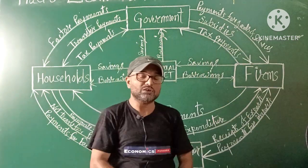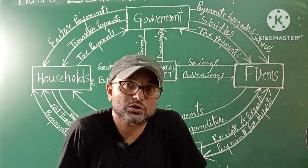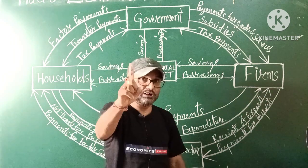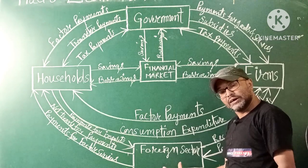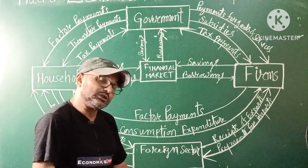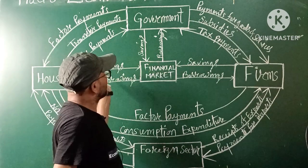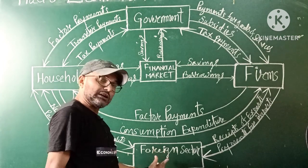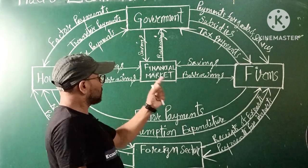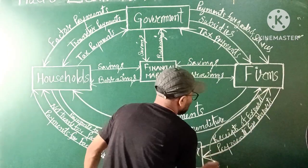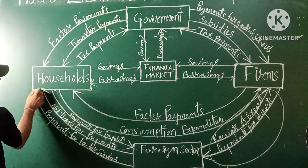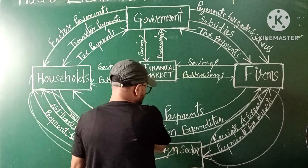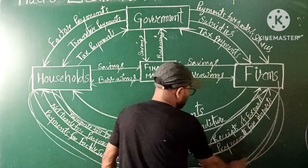This is the four-sector circular flow. The foreign sector concept involves its relationship with firms and with households. The most important concept here is the addition of the foreign sector to the existing three-sector model, completing the four-sector circular flow of income.